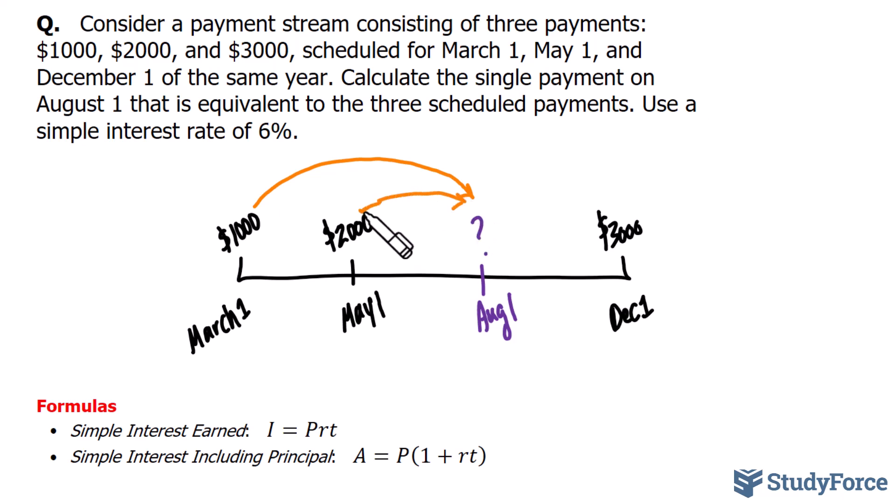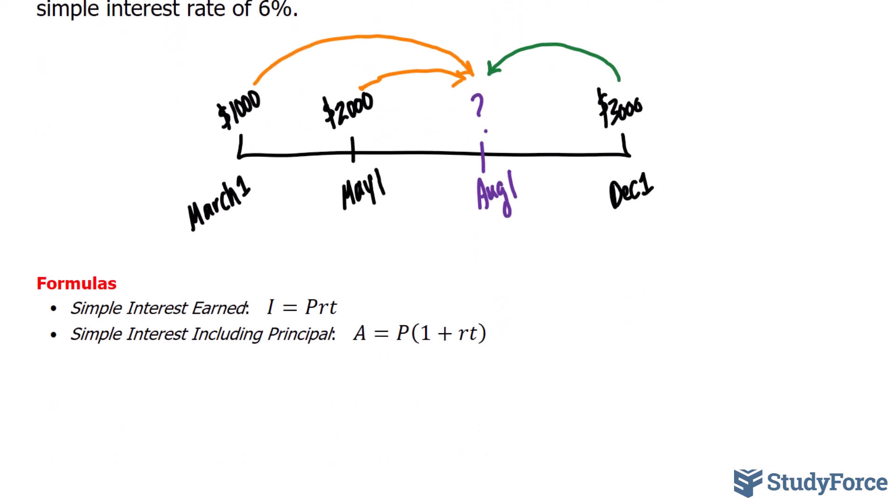The $3,000 payment, which occurs in the future relative to our focal date of August 1st, needs to be discounted back to August 1st. Now, to calculate this, we will be using these two formulas. And note that the simple interest including principal formula stated over here is simply a combination of taking the principal amount and adding to it PRT.